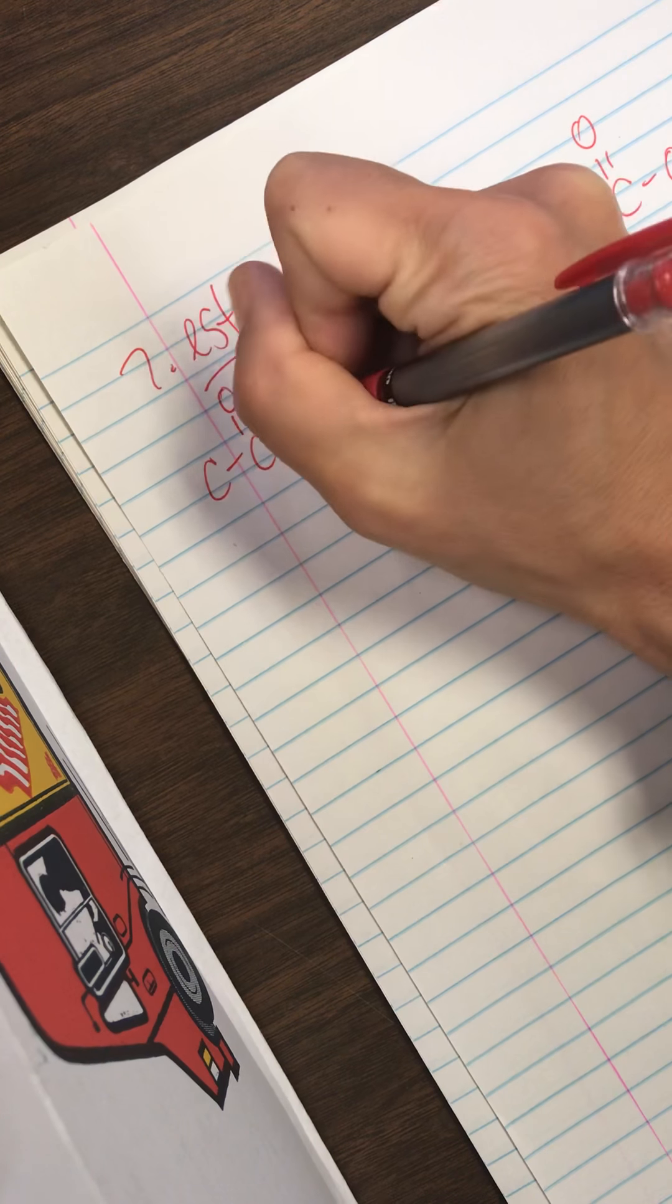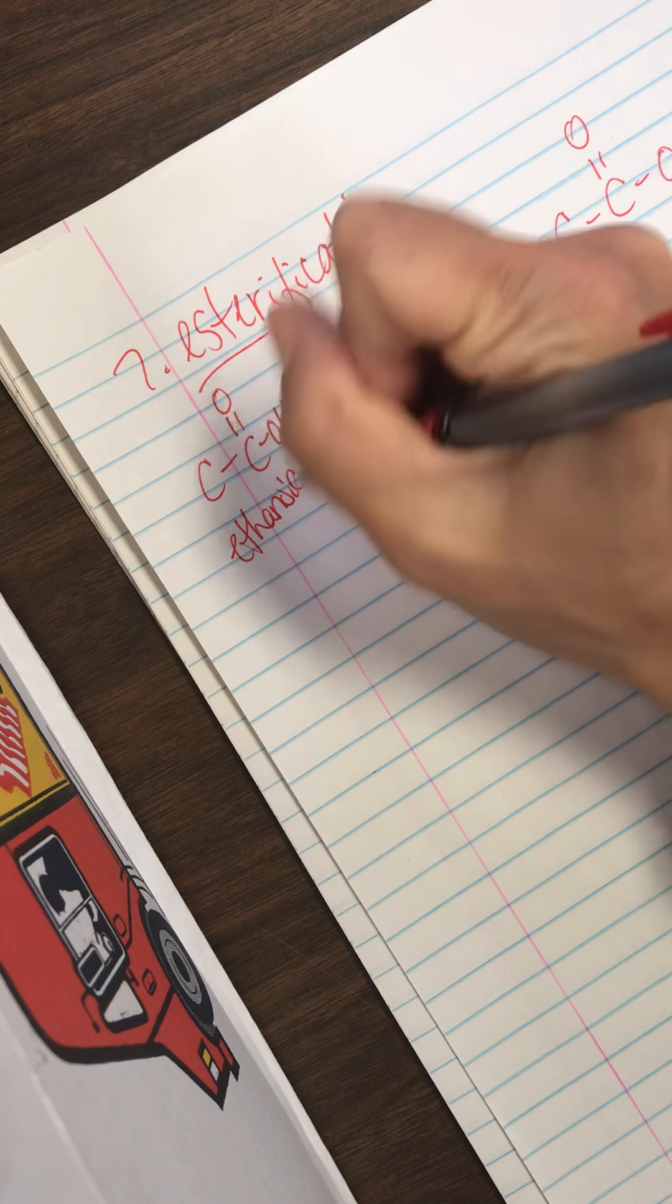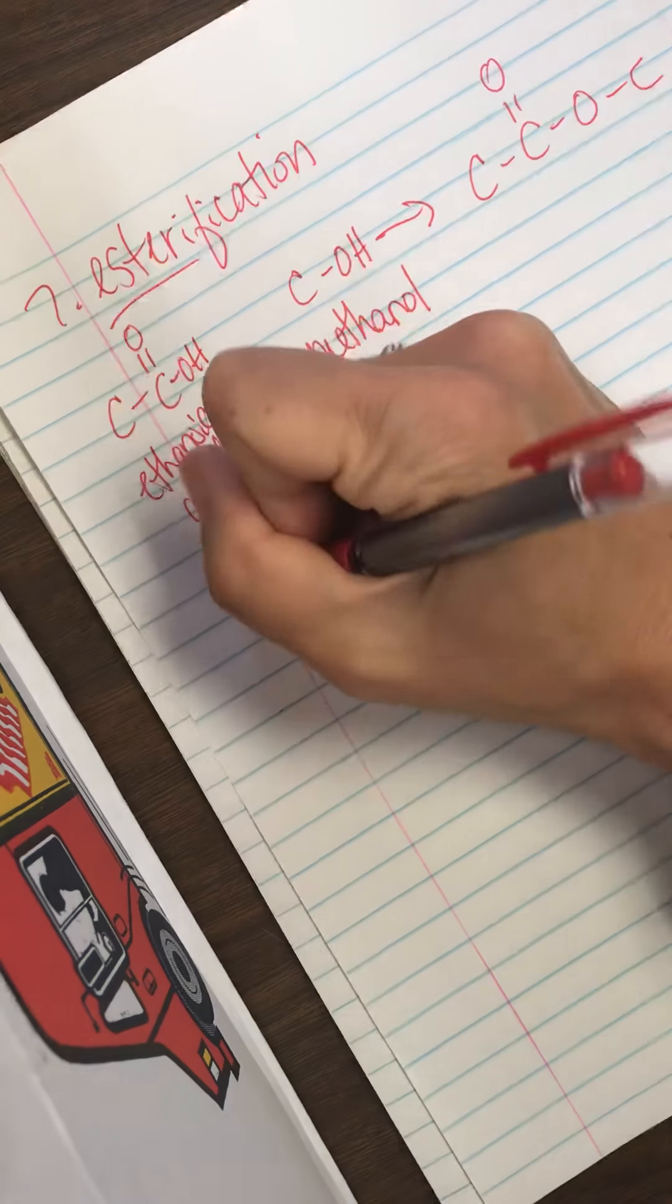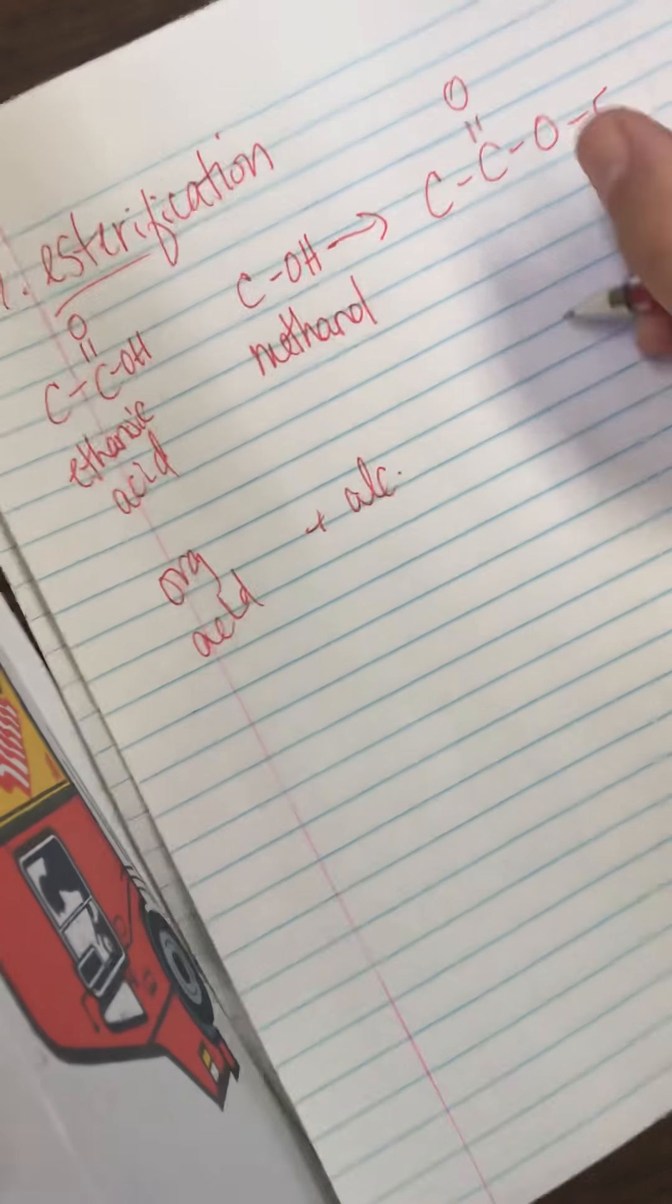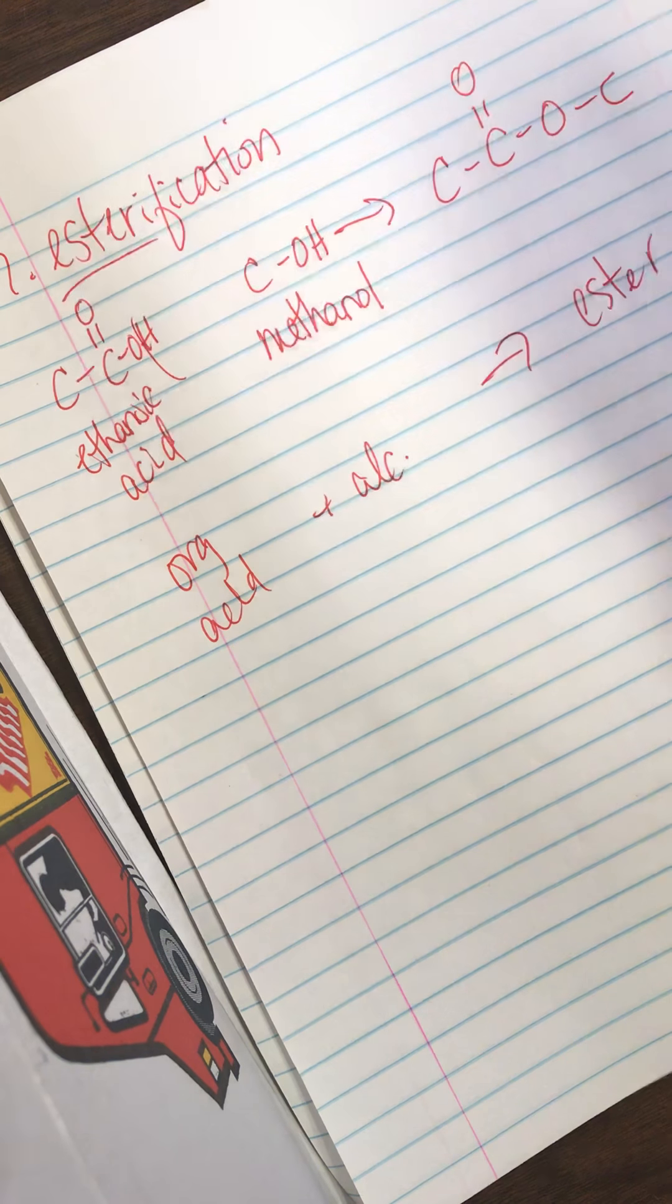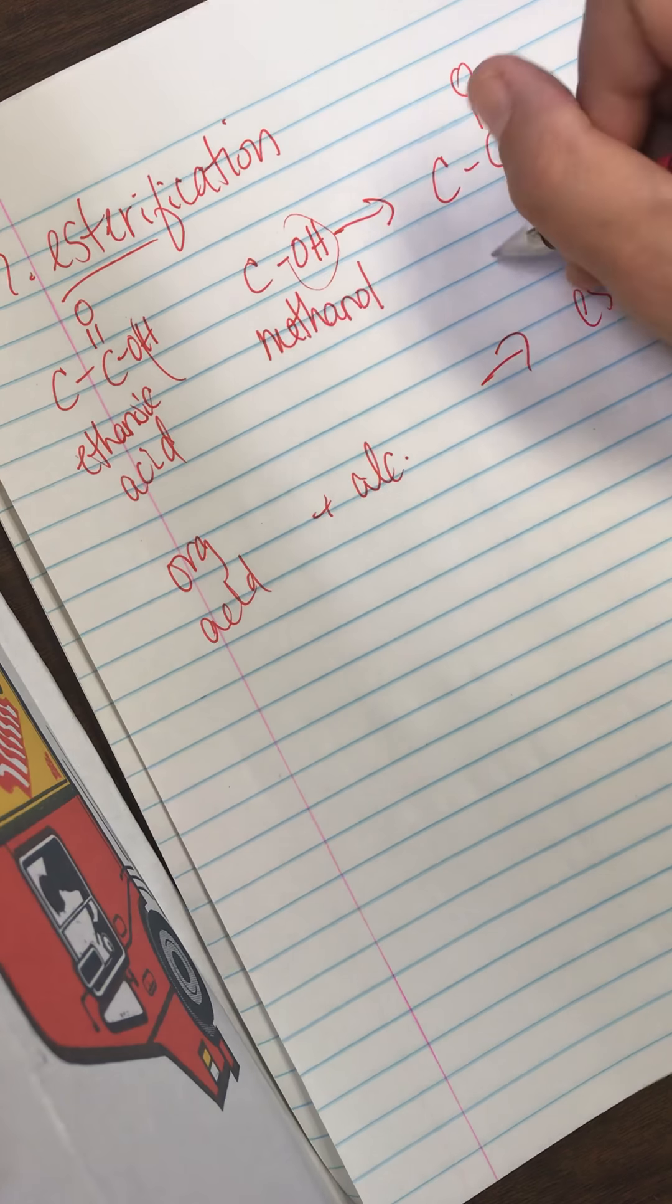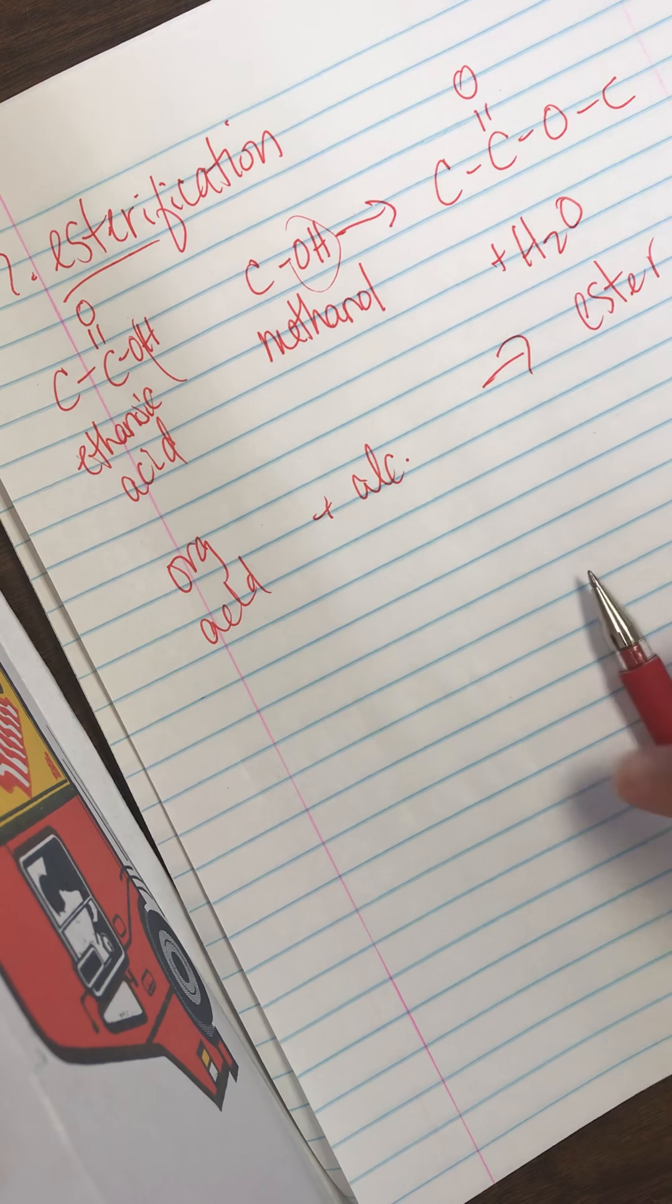So C, C with a double bonded O and an OH, that would be ethanoic acid. So you always take an organic acid plus an alcohol and you make an ester. The other product is you've taken off the H from this and the OH from this. So the other product is water. All right. Thanks for joining me.